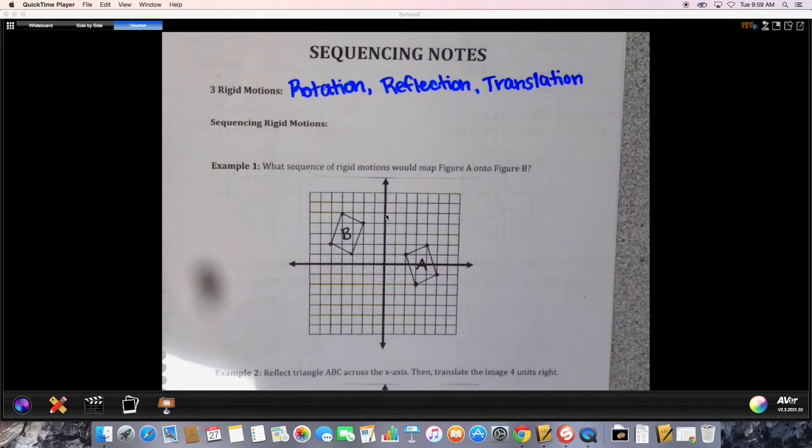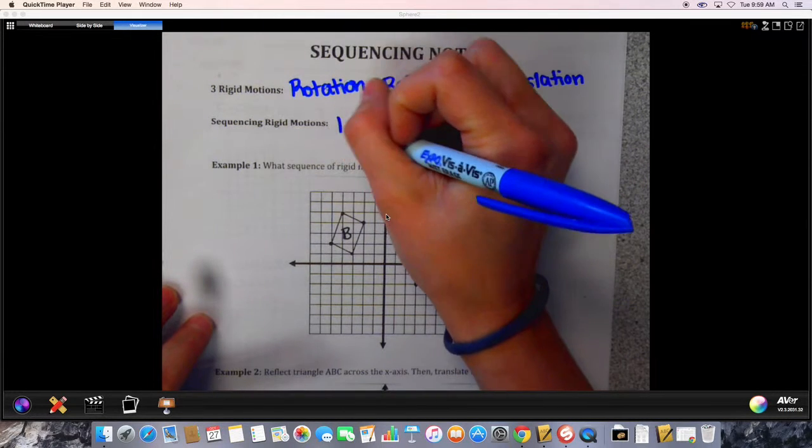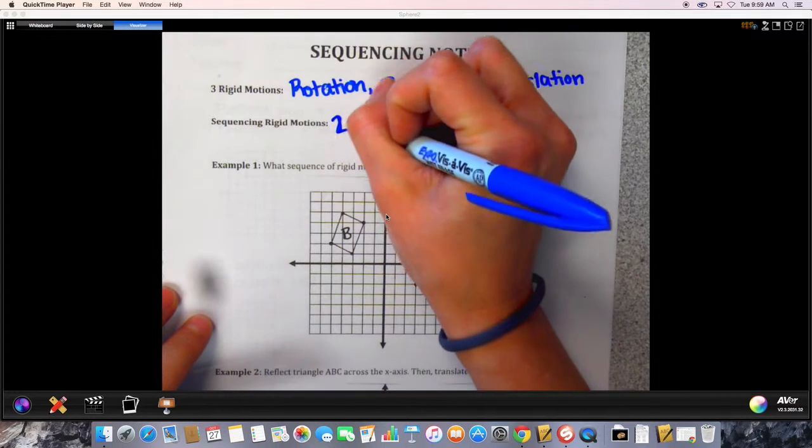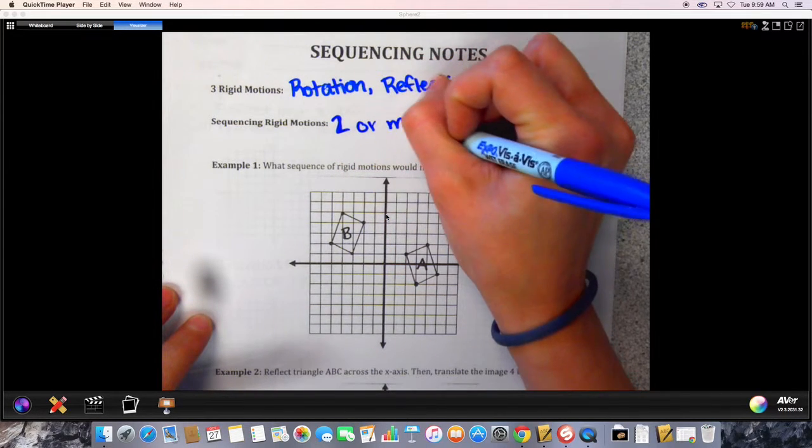We've done these all individually. Now we are going to sequence them. What that means is we're going to do one or more of them in sequence, or one right after the other. So we're going to say two or more together.